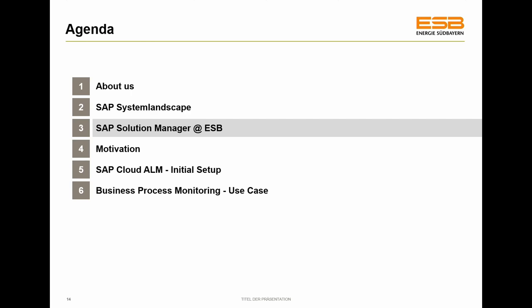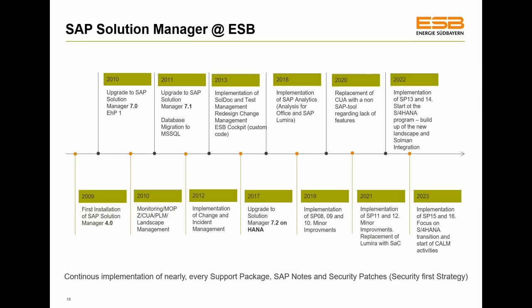Looking at the history of ALM at ESB: they started in 2009 with the implementation of Solution Manager 4.0. Since then, Patrick and Thomas have worked closely together, implementing various scenarios and functionalities around ALM. In 2017 they migrated to HANA database along with the full on-premise landscape. In 2022 the S4HANA transformation project started, and they implemented the latest support packages into Solution Manager to support that program.